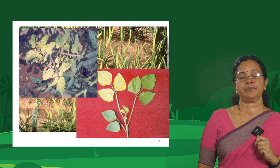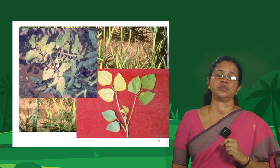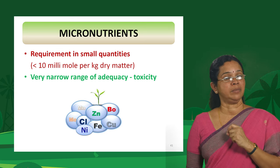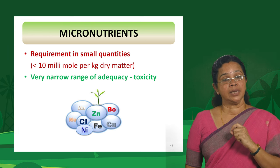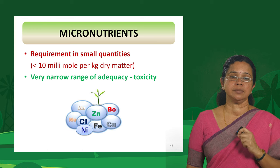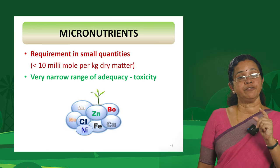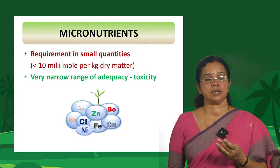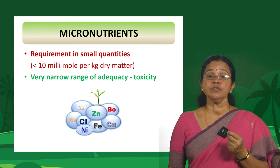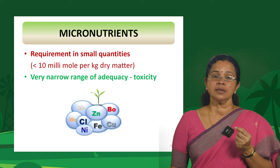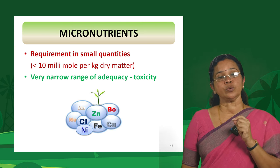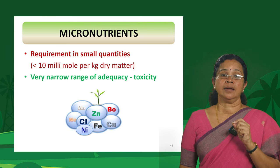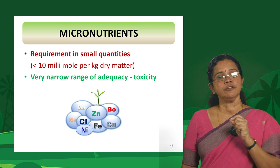Now let us see the micronutrients. Their requirement is only in small quantities, but that does not mean they should be designated as minor or unimportant. Micronutrients have a very narrow range of adequacy and toxicity — they are essential but required only in very very small quantities. They have crucial roles as catalysts and in chlorophyll formation and other biochemical reactions.